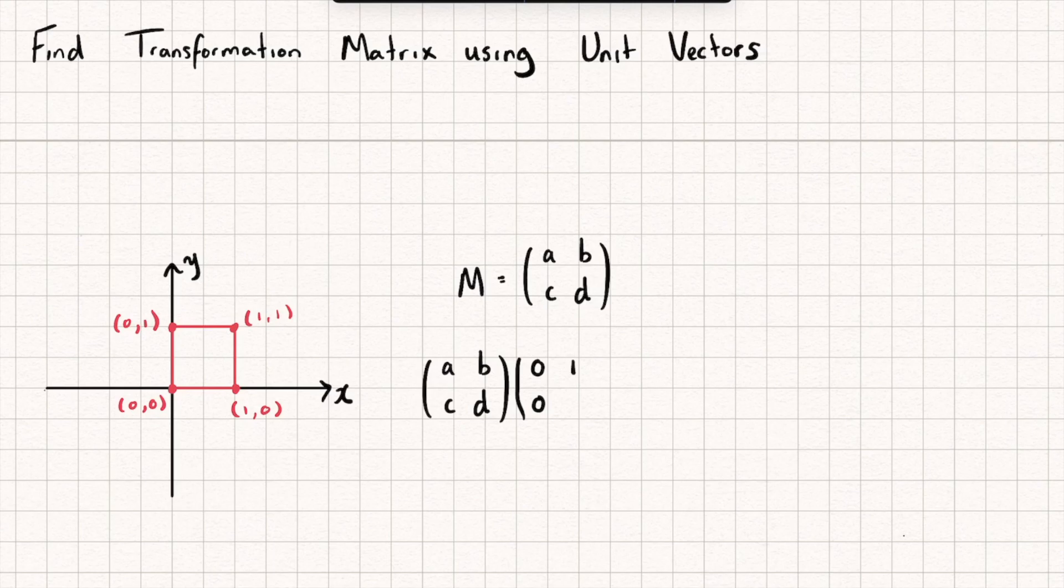So the point (0,0), the point (1,0), the point (0,1), and the point (1,1). Now when we multiply this out we get a new matrix: (0,0), (a,c), (b,d), and (a+b, c+d).